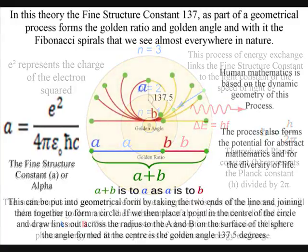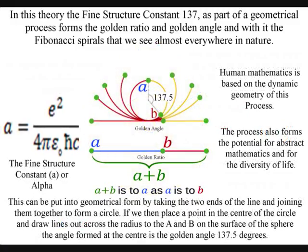This can be put into geometrical form by taking the two ends of the line and joining them together to form a circle. If we then place a point in the center of the circle and draw lines out across the radius to the a and b on the surface of the sphere, the angle formed at the center is the golden angle, 137.5 degrees.